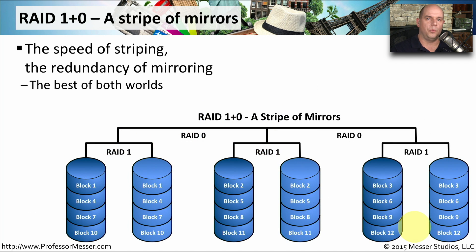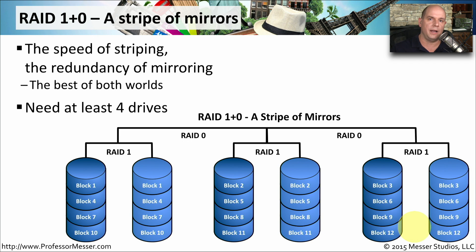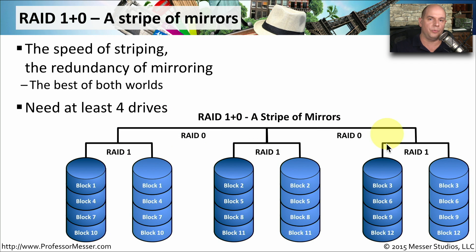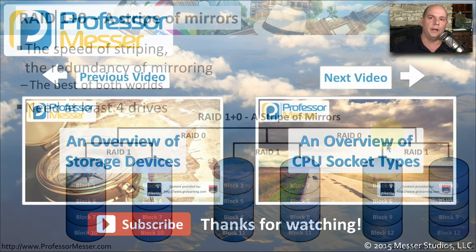The advantage of RAID 0 was very fast performance, but with no redundancy. To get around that, we combine RAID 0 with RAID 1 to create RAID 1 plus 0 — still using striping, but striping to a set of mirror drives. To do this, we need at least four drives. You can see three sets of mirror drives at the bottom, and we stripe between those three sets. If I lose any physical drive, I'm still up and running because I have redundancy within the stripe. RAID 10 gives us RAID 0 performance across RAID 1 mirrors.